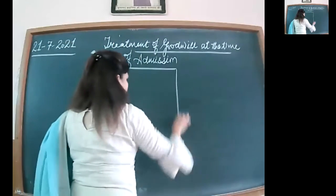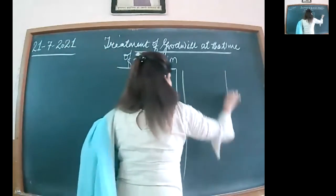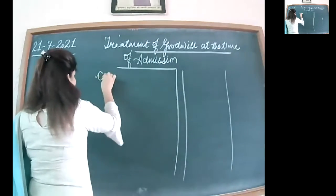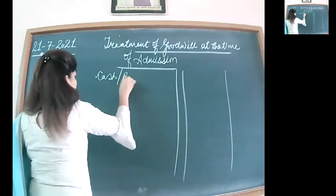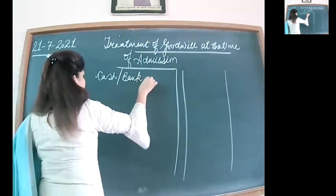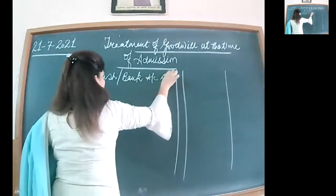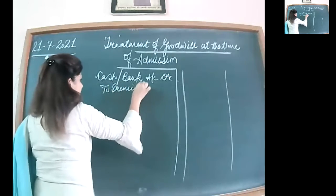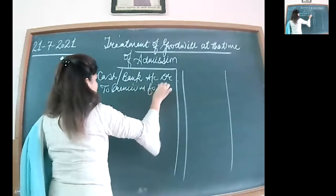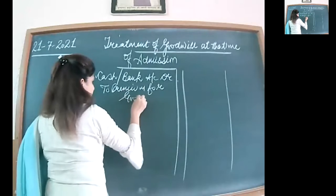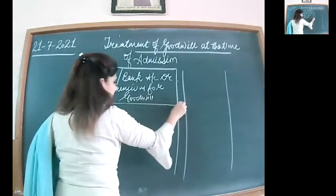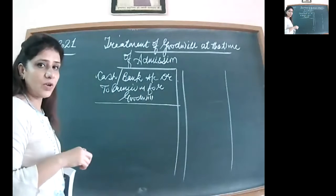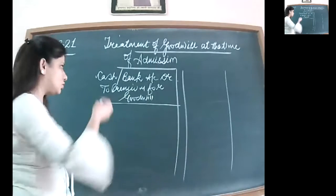I am writing the two entries once again. The first is when the new partner brings his share of goodwill in cash: cash account debited and bank account debited to premium for goodwill — being goodwill brought in cash. Then, whatever goodwill he or she is bringing, we are going to give to our old partners in their sacrificing ratio.